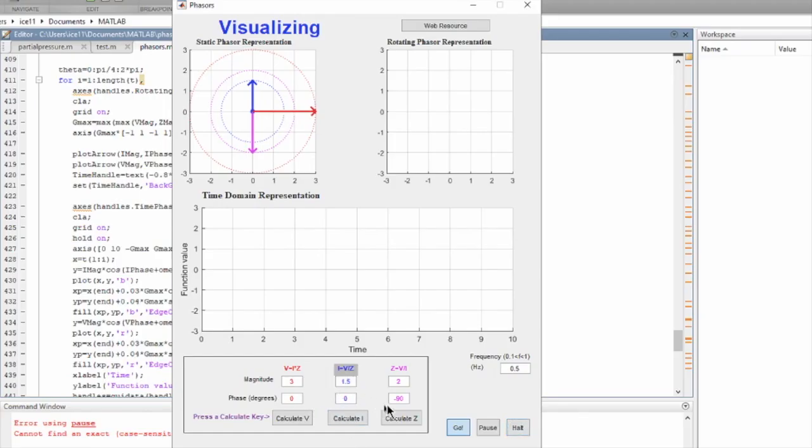So the first thing we're going to do is look at the case of a resistor. In the resistor, voltage and current are in phase, so I'm going to put zero zero where the phase is and I'm going to run this. I'm going to hit go.